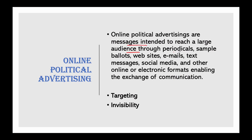What is online political advertising? Online political advertising includes messages intended to reach a large audience through periodicals, sample ballots, websites, emails, text messages, social media, and other online electronic formats which enable exchange of communication. These ad campaigns are used for appealing directly or indirectly for votes, or for financial or other support in any election campaign. There are two things that make online political advertising different from usual advertising: one is targeting — online advertising allows, especially on social networks, a kind of targeting that wasn't possible before — and the other is invisibility, meaning if there's targeted advertising on a social media platform, not everyone gets to know of it.